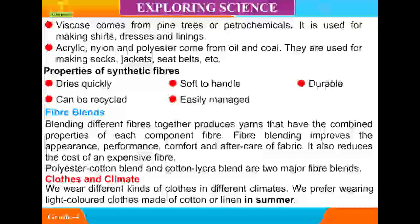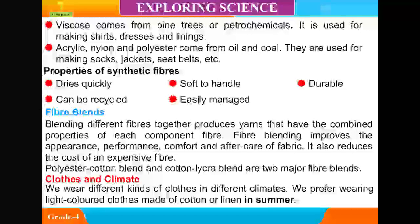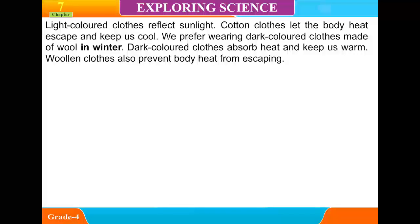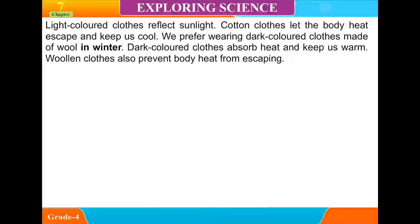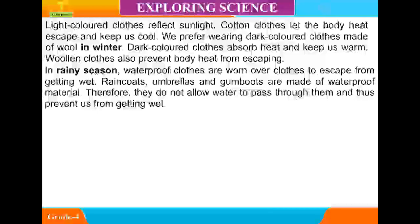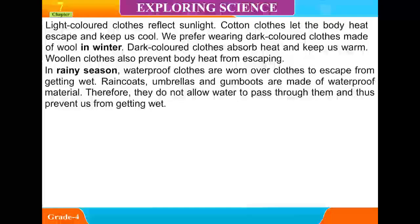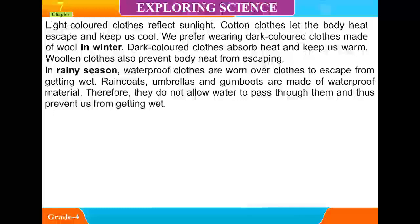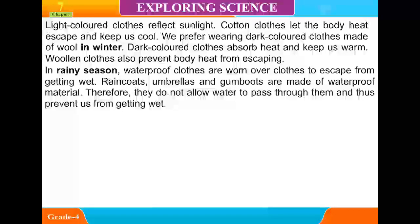Clothes and climate. We wear different kinds of clothes in different climates. We prefer wearing light-colored clothes made of cotton or linen in summer. Light-colored clothes reflect sunlight, and cotton clothes let body heat escape and keep us cool. We prefer wearing dark-colored clothes made of wool in winter. In the rainy season, waterproof clothes are worn to avoid getting wet. Raincoats, umbrellas, and gumboots are made of waterproof material and do not allow water to pass through them.